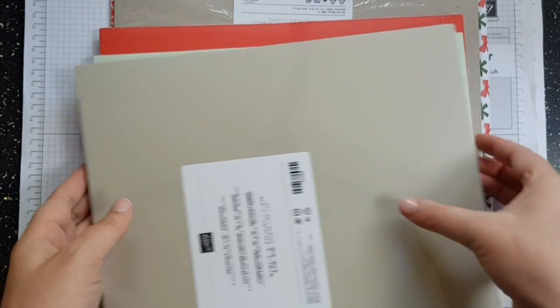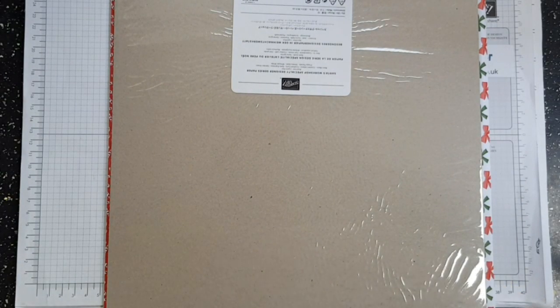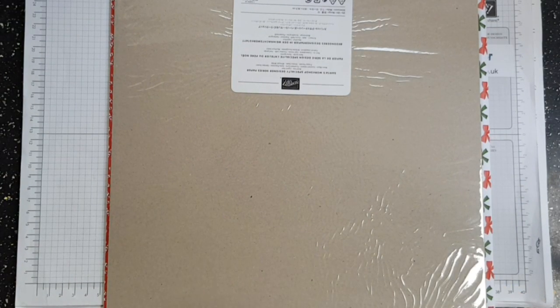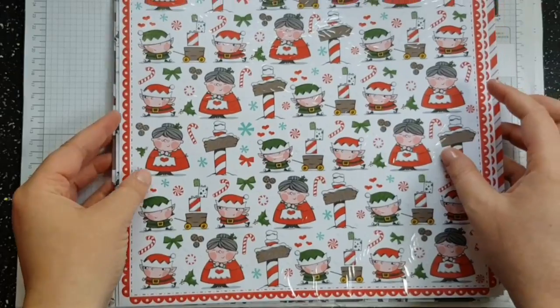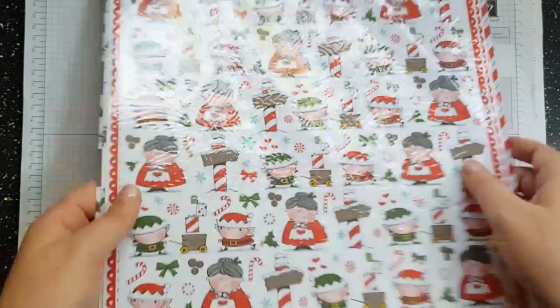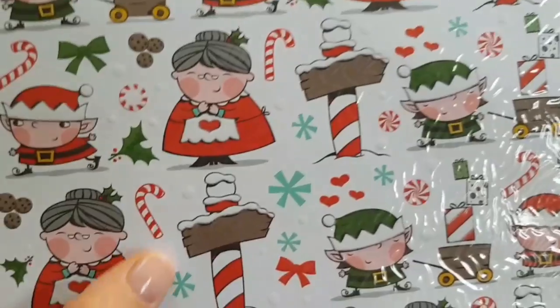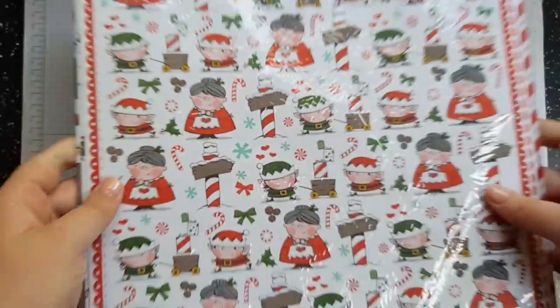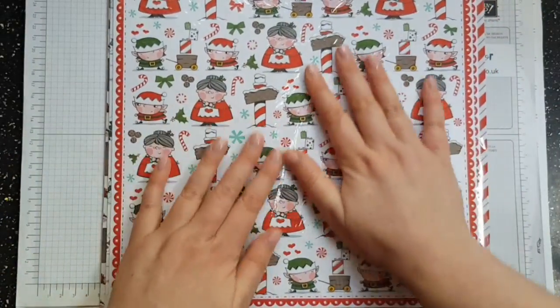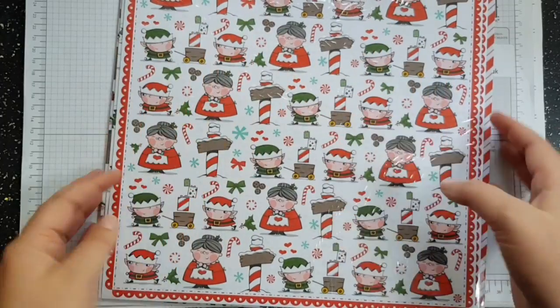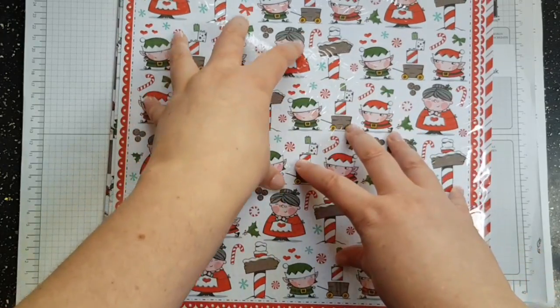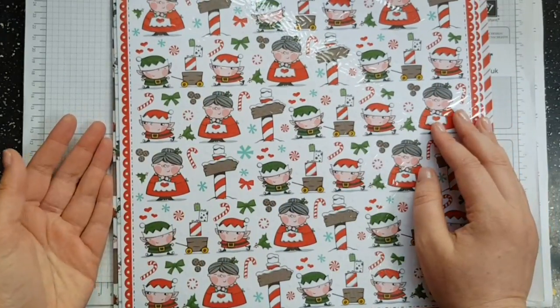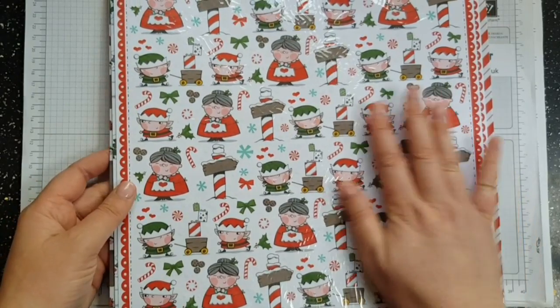And then right here I've got the Santa's workshop 12 by 12 paper and this is amazing. So this one I don't know if you can see through the paper, it's actually got texture so it looks like it's been through the embossing machine and it is absolutely gorgeous. So again I will show you these papers when I go through what I have of the Santa's workshop suite, so actually I made it through in another video.